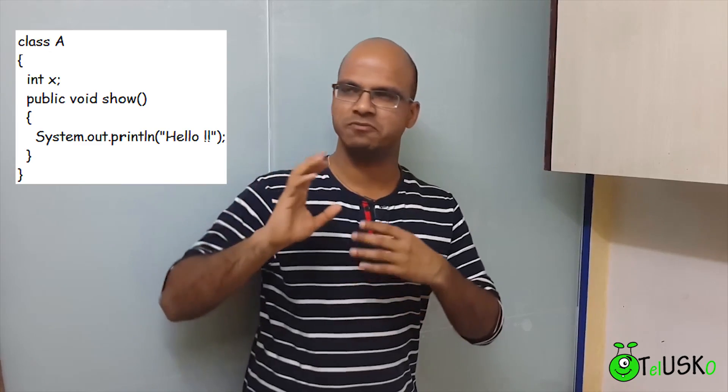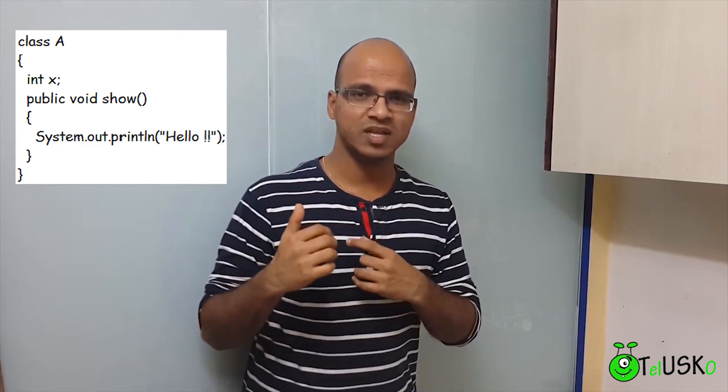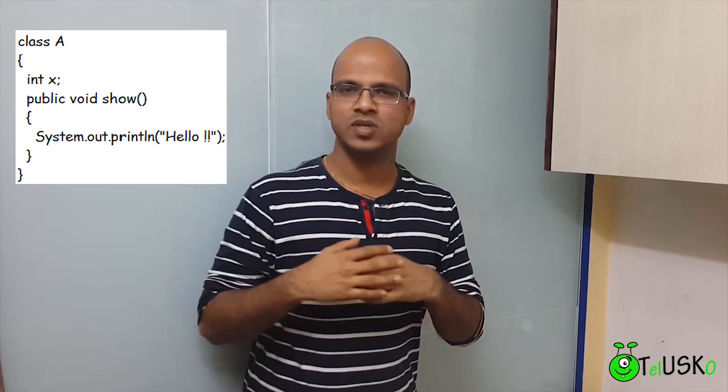So just imagine we have a class here. This class, we need to create an object of this class. We have a class in which we have some variables, some methods. So we need to create an object of this class. The name of the class is A. So let's create an object of this class.